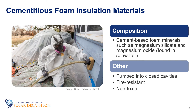Cementitious insulation material is a cement-based foam used as spray foam or foamed-in-place insulation. One type contains magnesium silicate and has an initial consistency similar to shaving cream. Cementitious foam costs about as much as polyurethane foam and is made from materials such as magnesium oxide, which can be extracted from seawater.